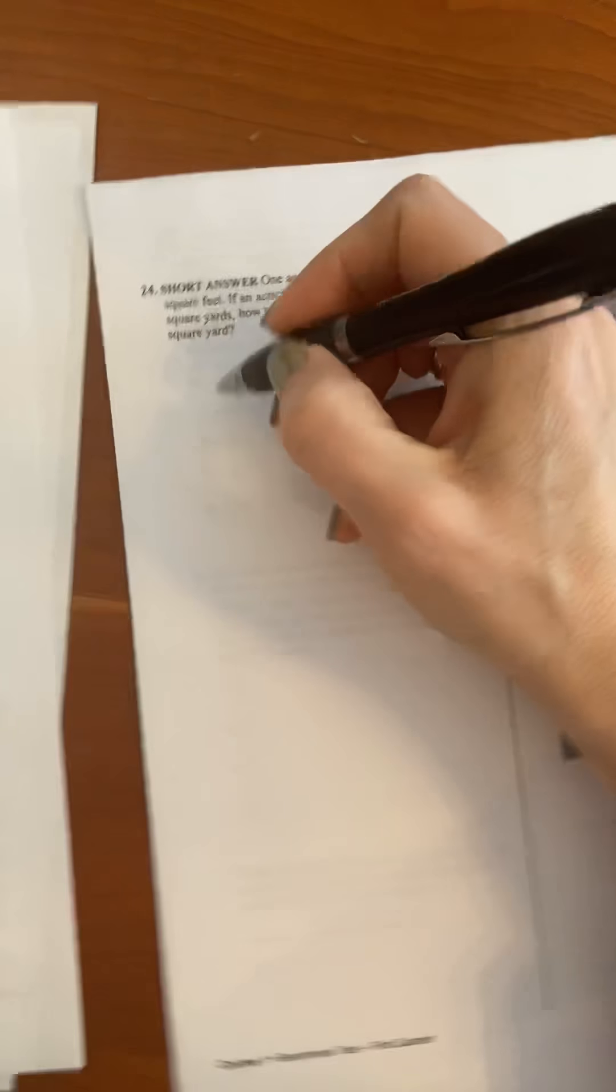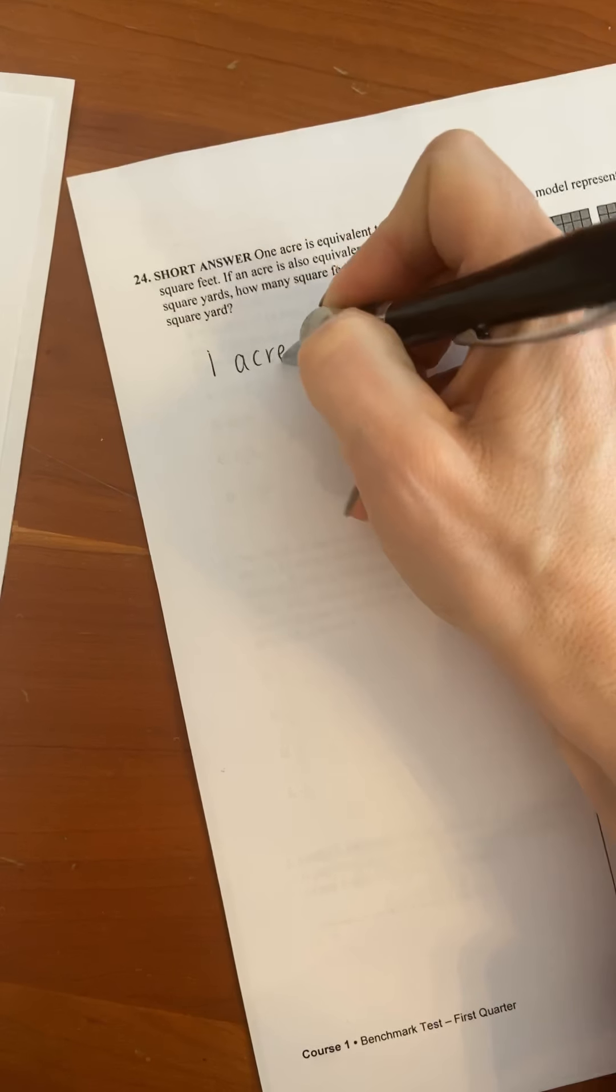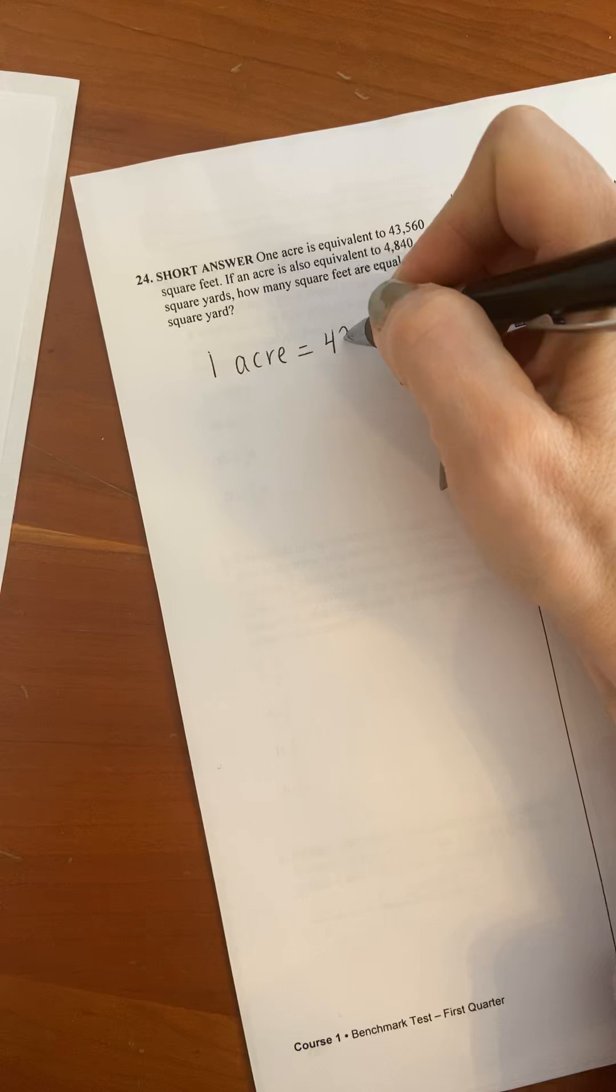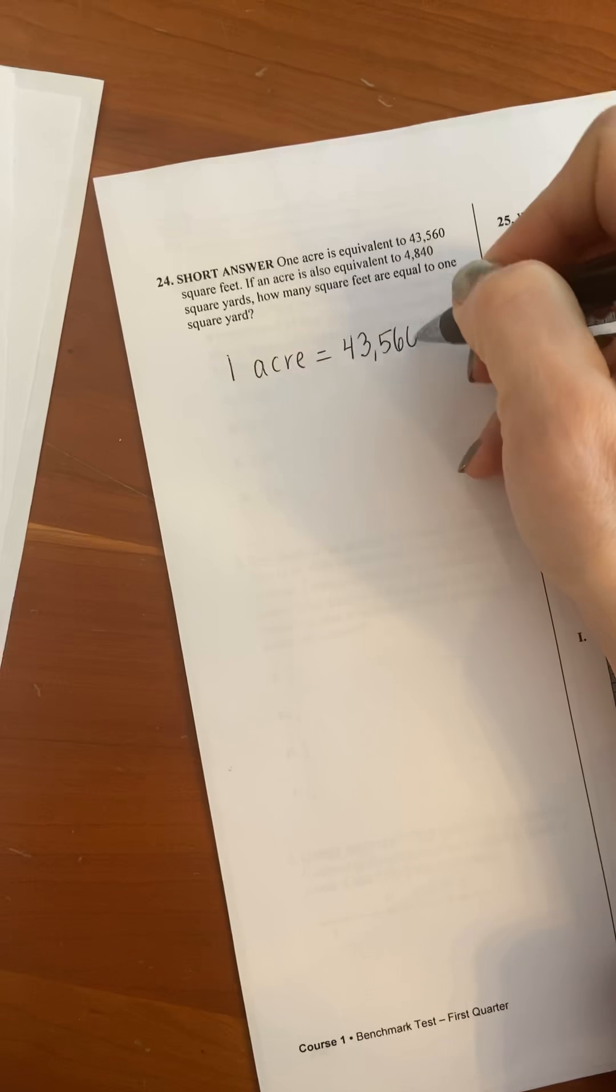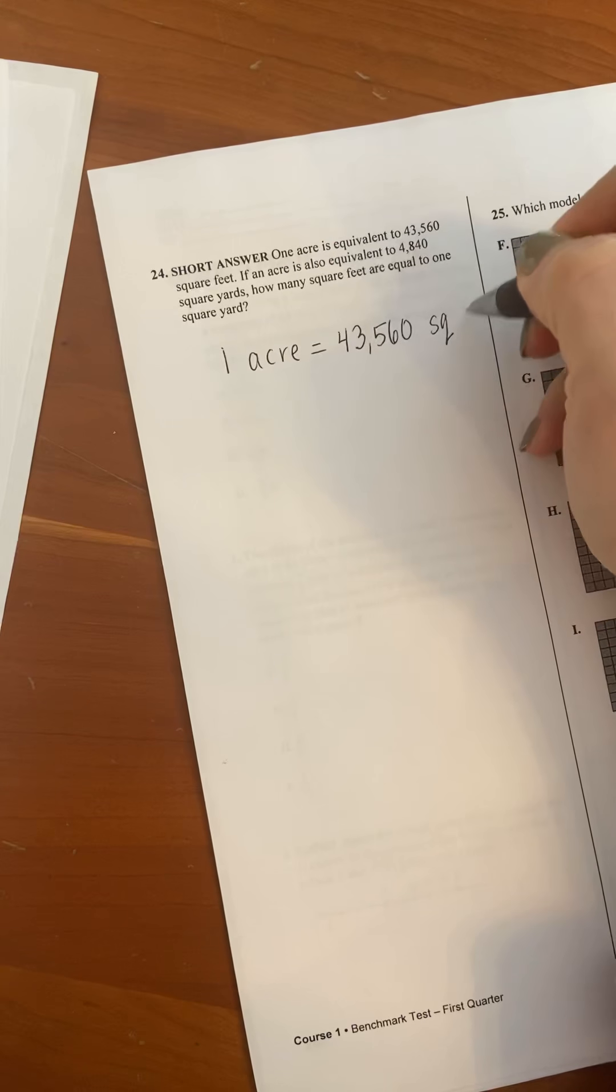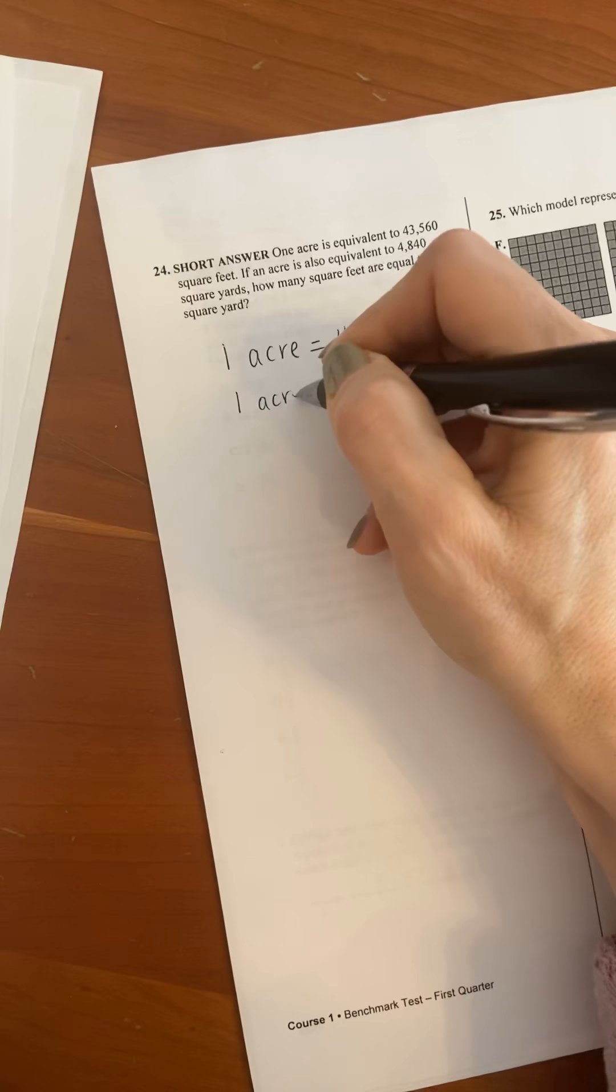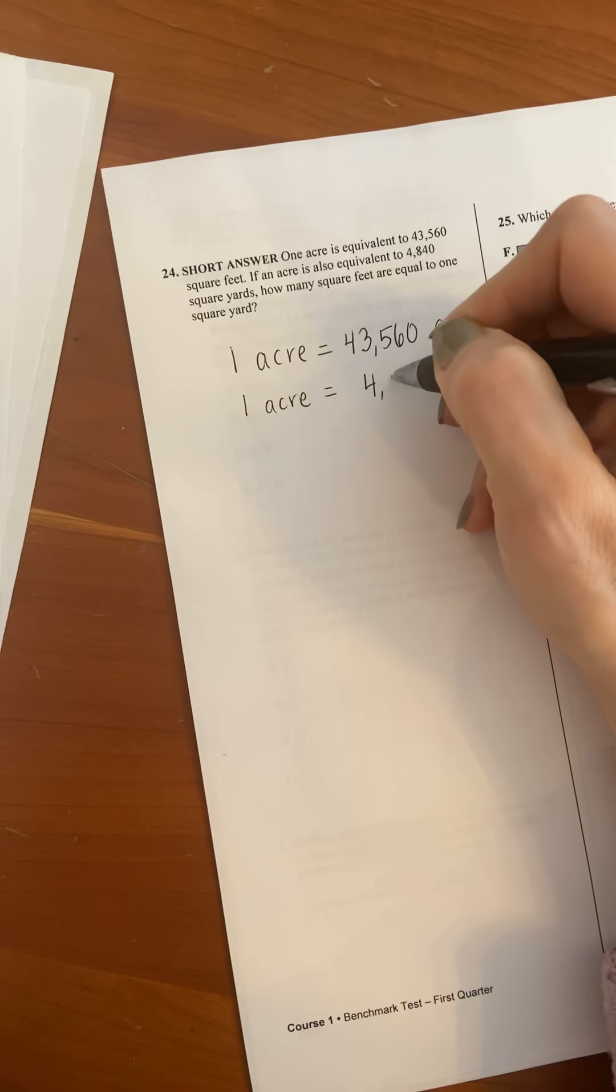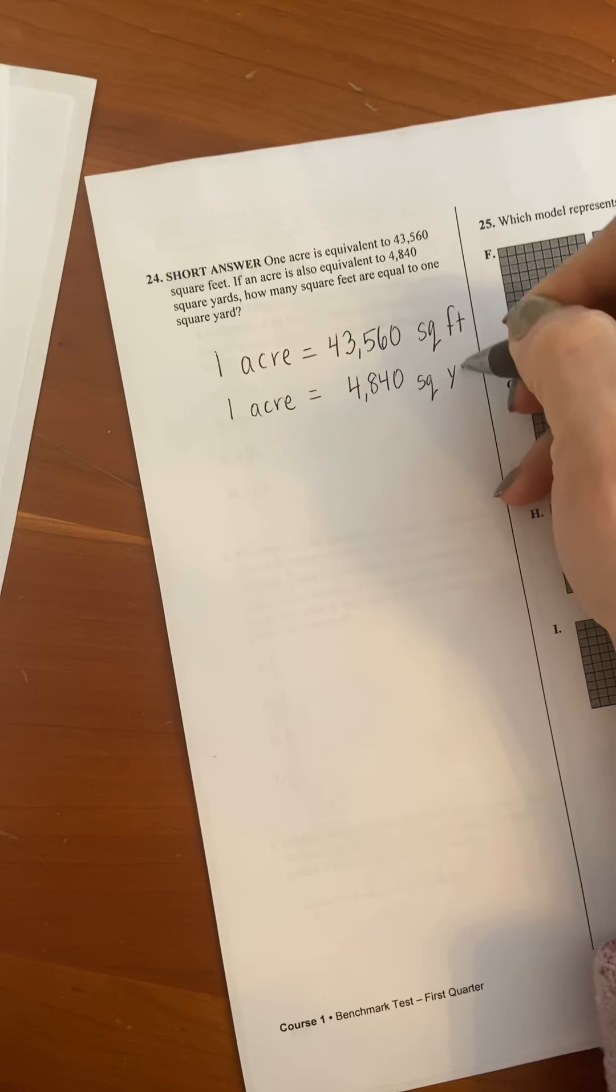So I'm going to set it up and just show you. What they're telling you is one acre is equal to 43,560 square feet and they're also telling you that one acre is equal to 4,840 square yards.